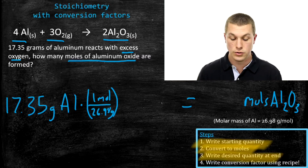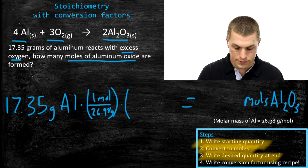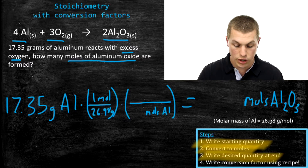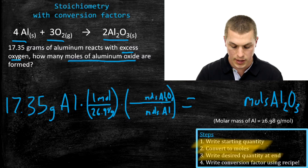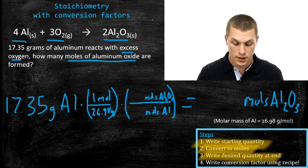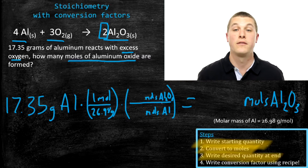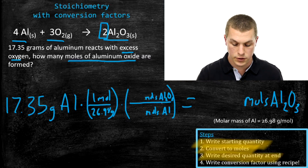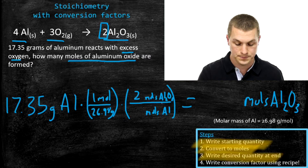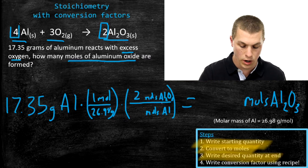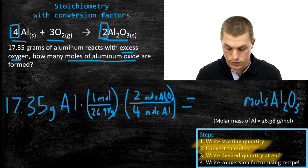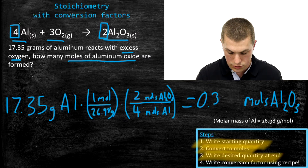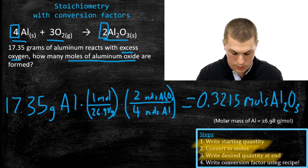We write our conversion factor using the chemical recipe. We want to get rid of moles of aluminum, so that goes on the bottom, and moles of Al₂O₃ goes on top. The numbers come from the recipe: there's a 2 in front of aluminum oxide and a 4 in front of aluminum. So we put 2 on top and 4 on the bottom. Plugging that all into the calculator, we get 0.3215 moles of aluminum oxide.